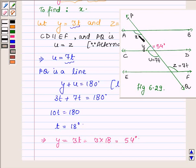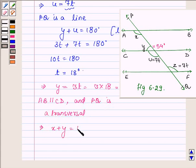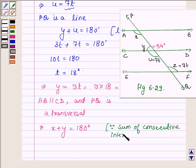Now, since AB is parallel to CD and PQ is a transversal, X plus Y equals 180 degrees because the sum of consecutive interior angles is supplementary.